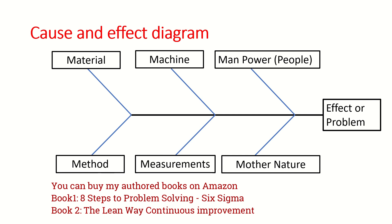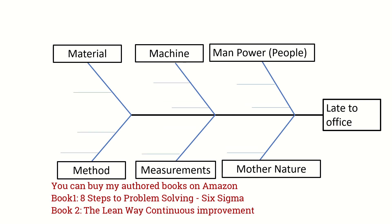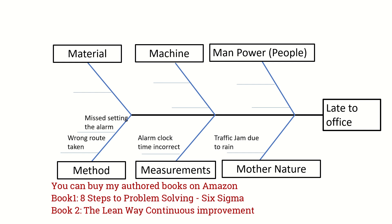Let us take one example to understand how a fishbone diagram is used. Suppose 'late to office' is the problem statement. People are coming late to office and somebody is trying to identify the real root causes. Some commonly cited reasons are: traffic jam due to rain, which falls under mother nature; alarm clock time set incorrectly, which is a measurement problem; missing the alarm or taking a wrong route, which is a method problem.